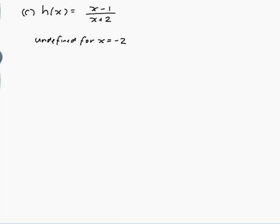If x is less than minus 2, then x plus 2 would be negative, and x minus 1 would have to be negative because minus 2 minus 1 is minus 3. So when we divide them, negative divided by negative is positive. It's positive on the left hand side of x equals minus 2.